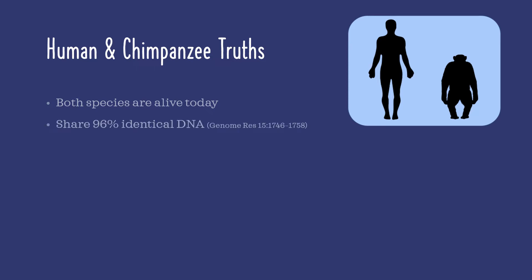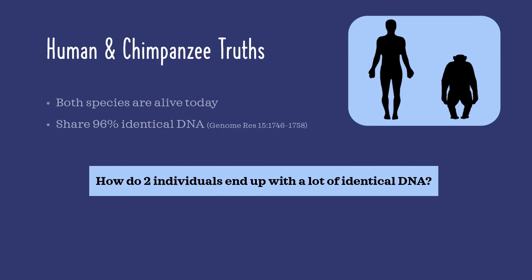Here's where the facts get interesting. Genetic analyses have revealed that humans and chimps share 96% identical DNA. This is a high degree of similarity and it did not happen by chance. You may be wondering how two individuals can end up with so much identical DNA. So let's examine how this came to pass.